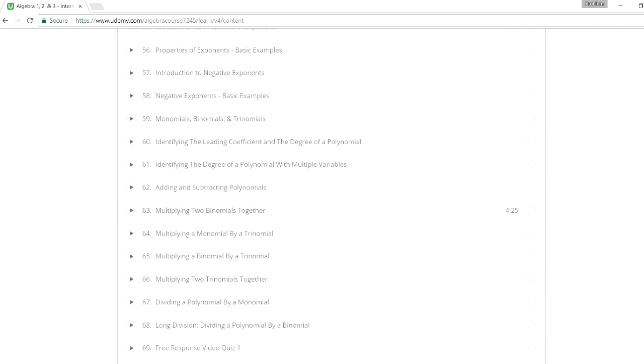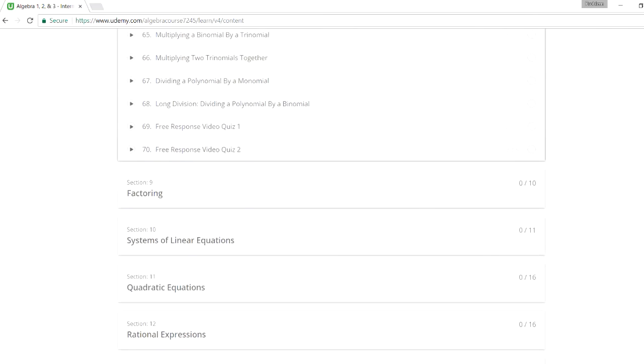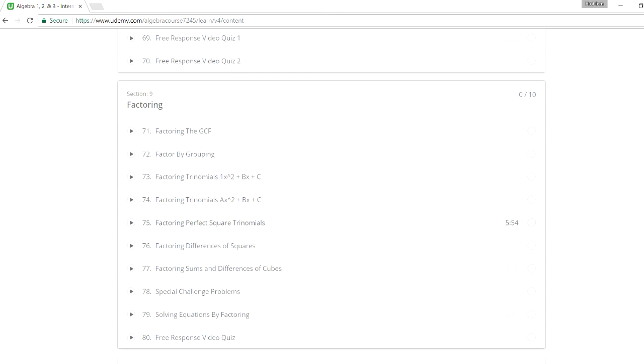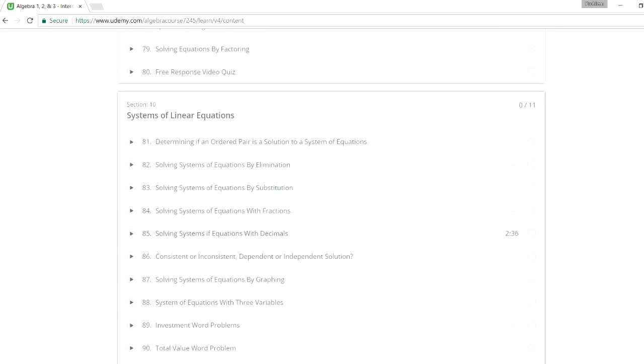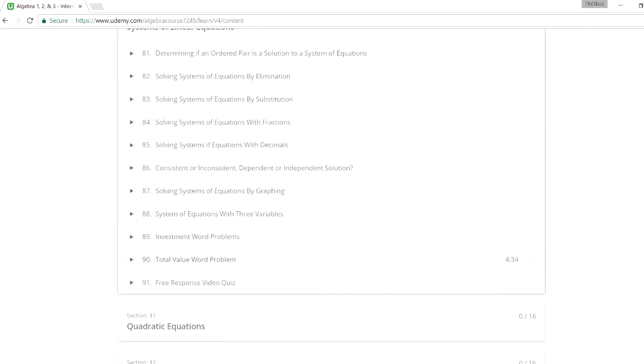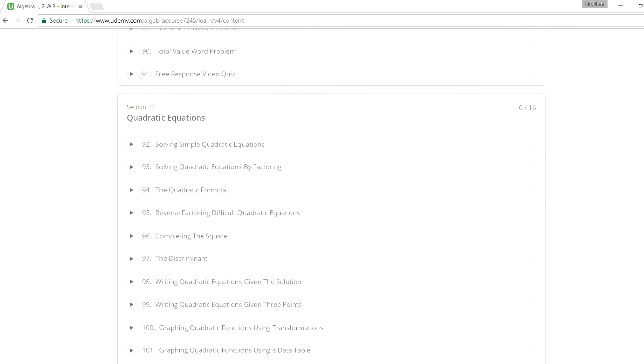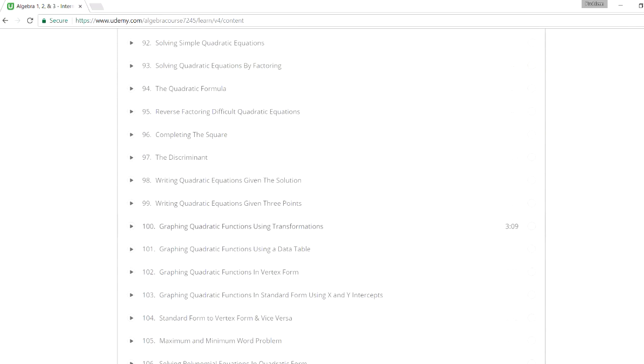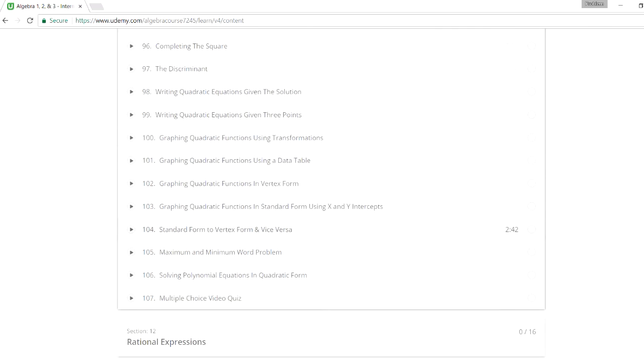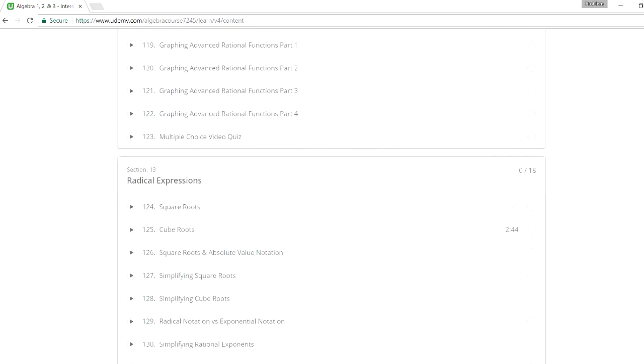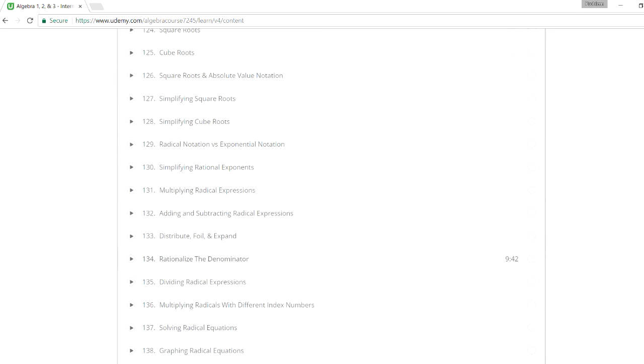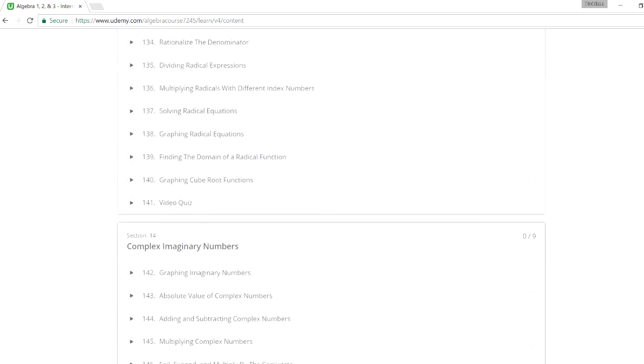And then we have polynomials, and that's a long section. And then factoring, that's another topic you need to master. And then system of equations. You can solve it by elimination, substitution. There's also word problems as well. Sometimes you've got to solve equations with three variables, x, y, and z. So that could be helpful. Next, quadratic equations, how to use a quadratic formula, how to graph them, how to convert between standard and vertex form. And then you have rational expressions, and radical expressions, solving radical equations, simplifying it, things like that. And every section has a quiz. So you can always review what you've learned if you have a test the next day.